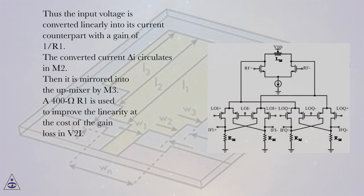Thus the input voltage is converted linearly into its current counterpart with a gain of 1/R1. The converted current I circulates in M2. Then it is mirrored into the up-mixer by M3. A 400 ohm R1 is used to improve the linearity at the cost of the gain loss in V2I.